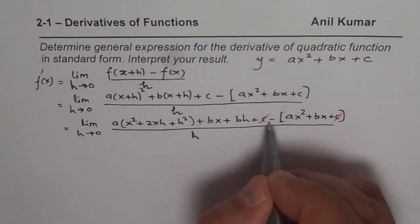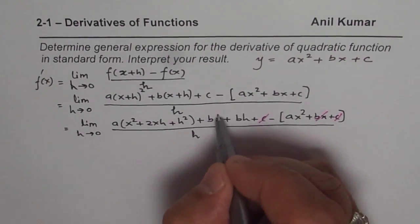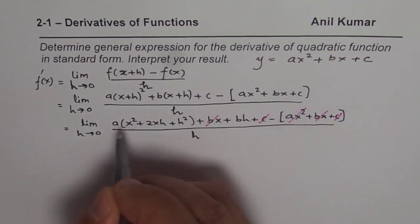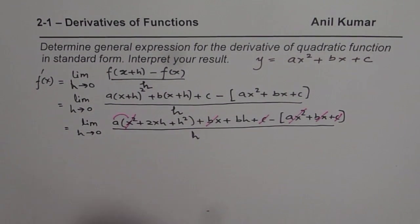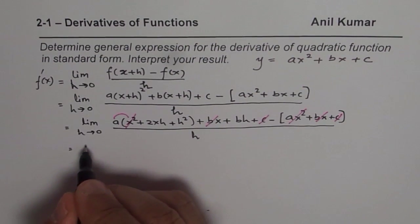To simplify, all these three terms should get canceled. Plus c with this plus c, when you take away bx with bx, ax square with a times x square. So once you get rid of these terms, you could simplify further.